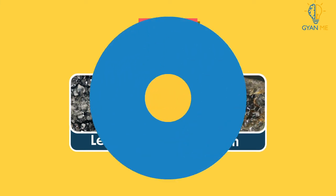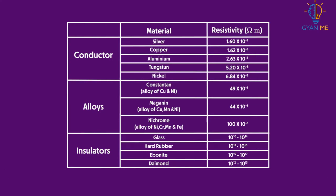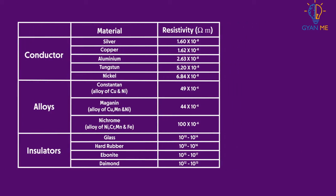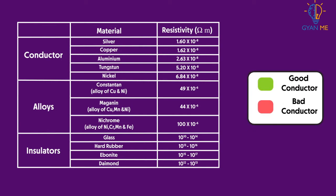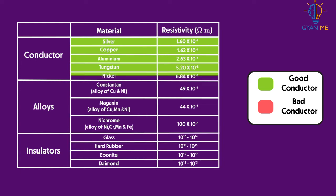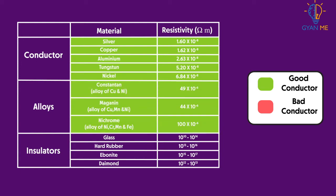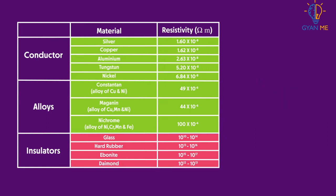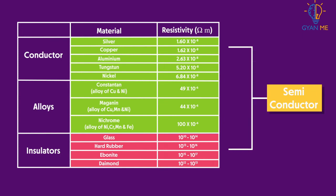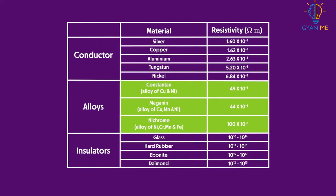The given table shows the resistivity of different materials. From the table, we can conclude that a good conductor has less resistivity, in the range of 10 raised to minus 8 ohm meter to 10 raised to minus 6 ohm meter. A bad conductor or insulator has high resistivity of the order 10 raised to 12 to 10 raised to 17 ohm meter. The resistivity of semiconductors lies between that of conductors and insulators. It is also clear from the table that the resistivity of an alloy is generally higher than that of its constituent metals.